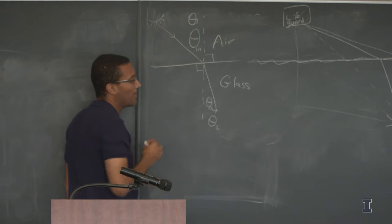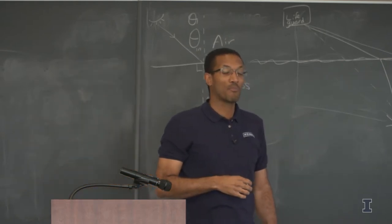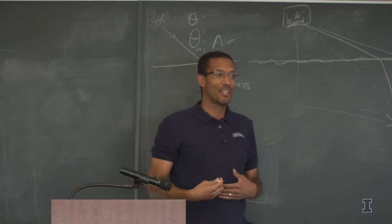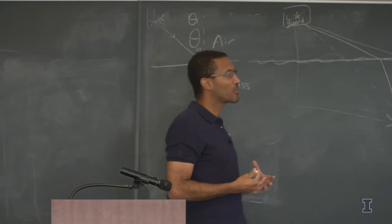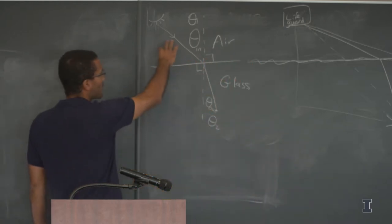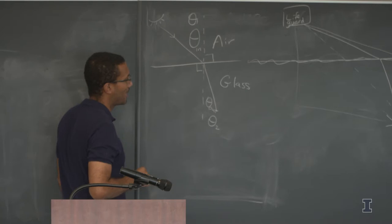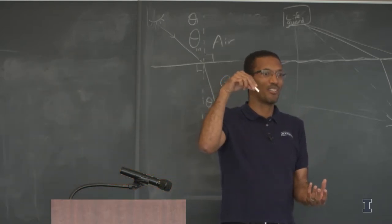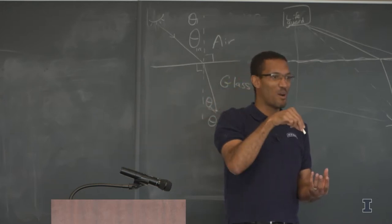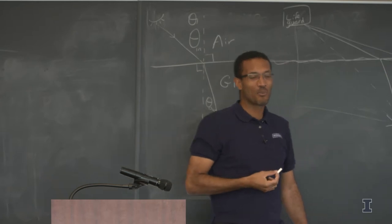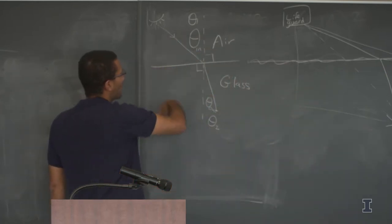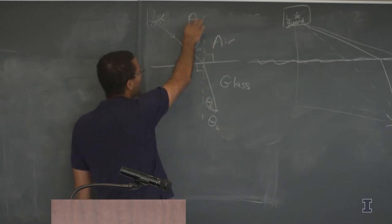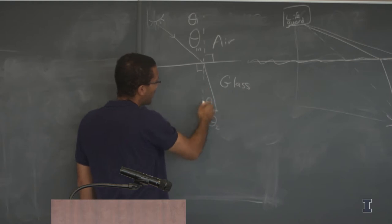Snell's Law is also a solution to Maxwell's equations, which describe the relationship between electric and magnetic fields and explain how light propagates. It allows us to calculate what angle light bends at. If you've ever looked at a straw in a glass of water, it looks displaced and bent — that's refraction. In this activity, students will explore how the angle of incidence affects the angle of refraction.